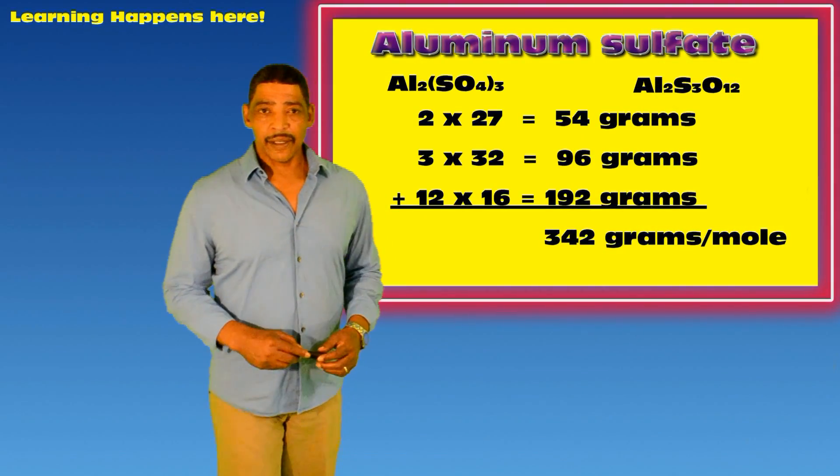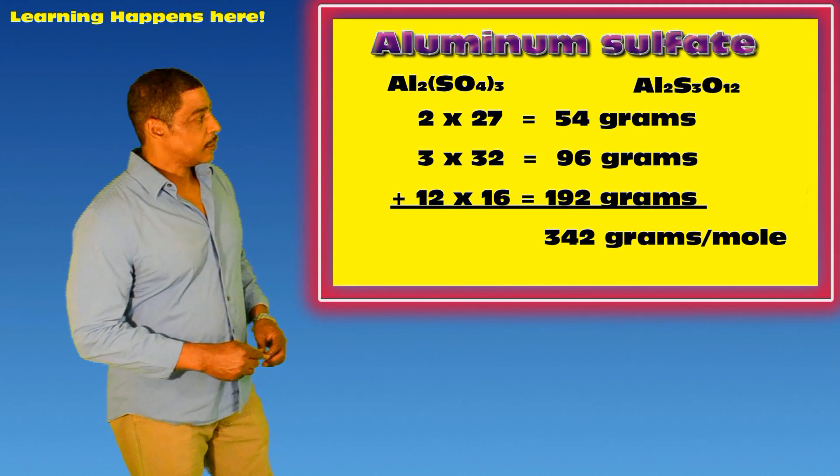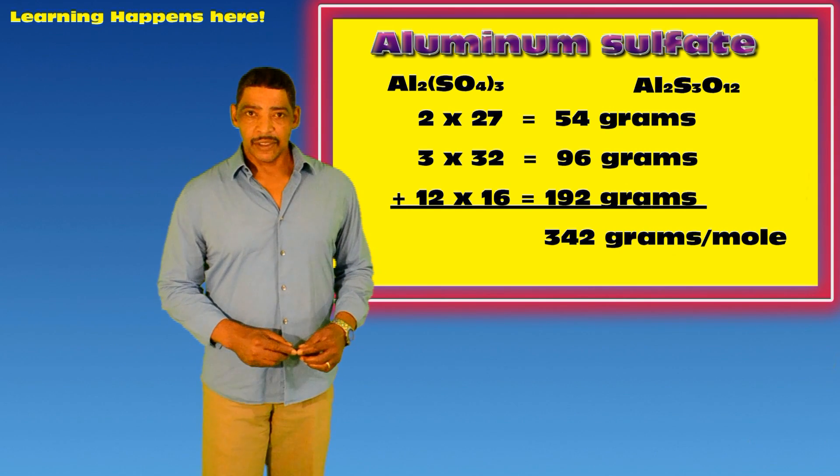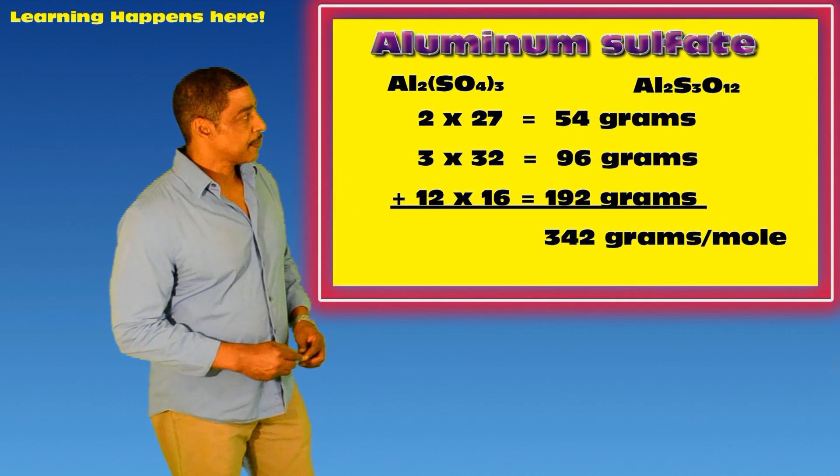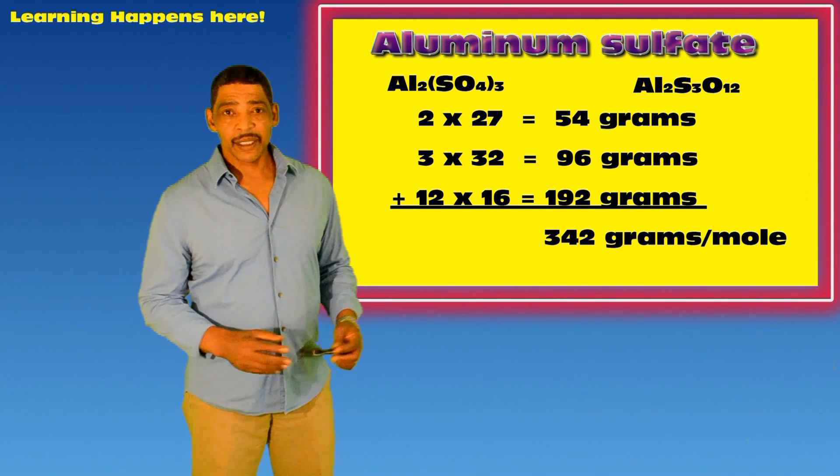Now calculating the formula mass of the compound becomes quite simple. We simply multiply 2 times 27, 3 times 32, and 12 times 16, which will equal 54 grams, 96 grams, and 192 grams respectively.